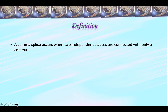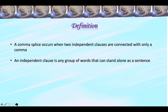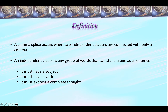In this video, we'll talk only about comma splices. A comma splice occurs when two independent clauses are connected with only a comma. An independent clause is any group of words that can stand alone as a sentence. In order for a word group to stand alone as a sentence, it must meet three criteria: it must have a subject, it must have a verb, and it must express a complete thought.